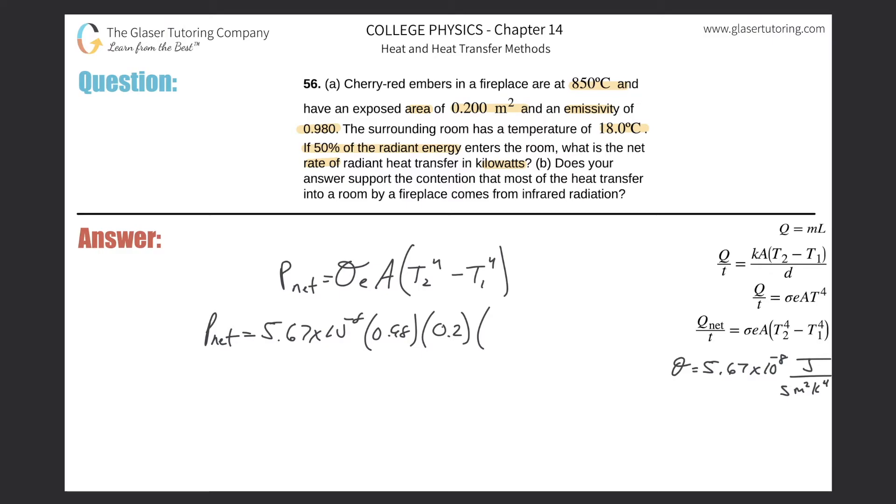Alright, so I'm just going to plug in the larger value first. So 850. Now remember though, this has to be converted into Kelvin. So 273 plus 850. That's going to be 1,123 Kelvin. That's raised to the fourth minus then the 18 degrees Celsius. So 273 plus 18. So that's going to be 291 Kelvin, raised to the fourth.